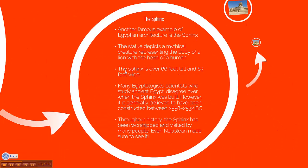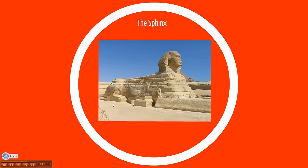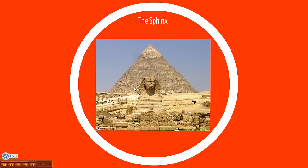The Sphinx. Another famous example of Egyptian architecture is the Sphinx. The statue depicts a mythical creature representing the body of a lion with the head of a human. The Sphinx is over 66 feet tall and 63 feet wide. Many Egyptologists, who are scientists that study ancient Egypt, disagree over when the Sphinx was built. However, it is generally believed to have been constructed between 2558 and 2532 BC. Throughout history, the Sphinx has been worshipped and visited by many people — even Napoleon made sure to see it. Here are some pictures of the Sphinx. As you can see, it is very close to the Great Pyramid.